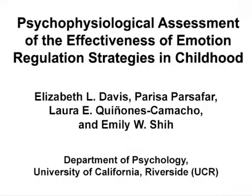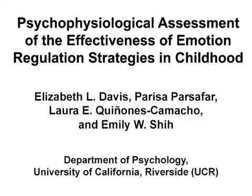The overall goal of this experimental paradigm is to assess the effectiveness with which children regulate negative emotions by measuring changes in psychophysiology while they use emotion regulation strategies. This method can help answer key questions in developmental, emotion, and clinical fields of psychology, such as how effective different emotion regulation strategies are for children to use to manage negative emotion.